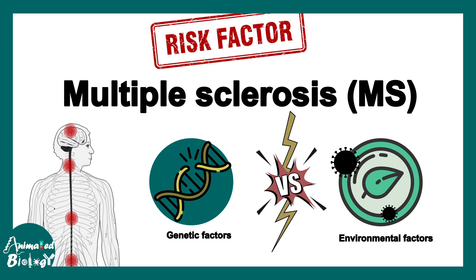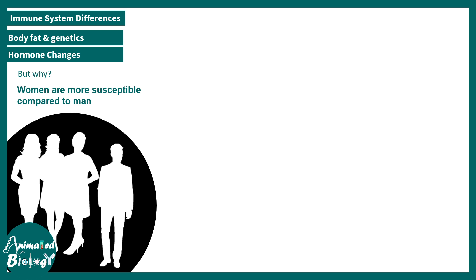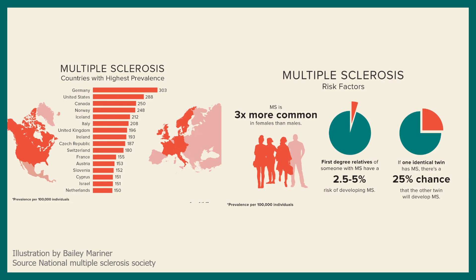MS has both genetic and environmental risk factors. Environmentally, women are more susceptible than men, possibly due to immunological, body fat, genetic, or hormonal differences. Geography is a major factor — in areas with limited sunlight, such as northern America and Russia, the risk of MS is very high. Vitamin D levels are strongly correlated with MS risk, as shown by many studies. In summary, MS is more common in females and in areas with low sunlight.